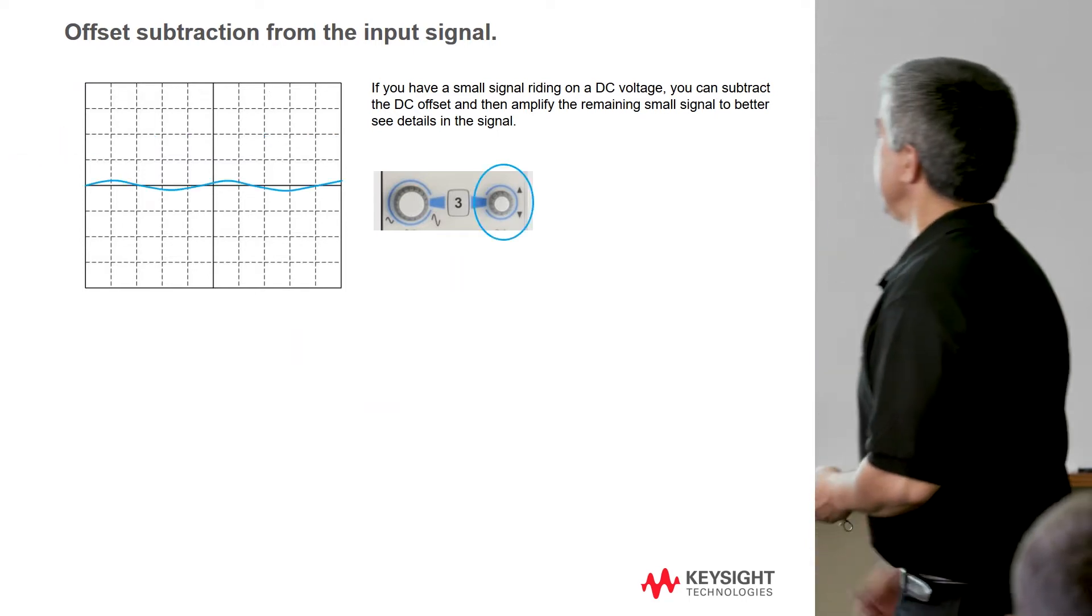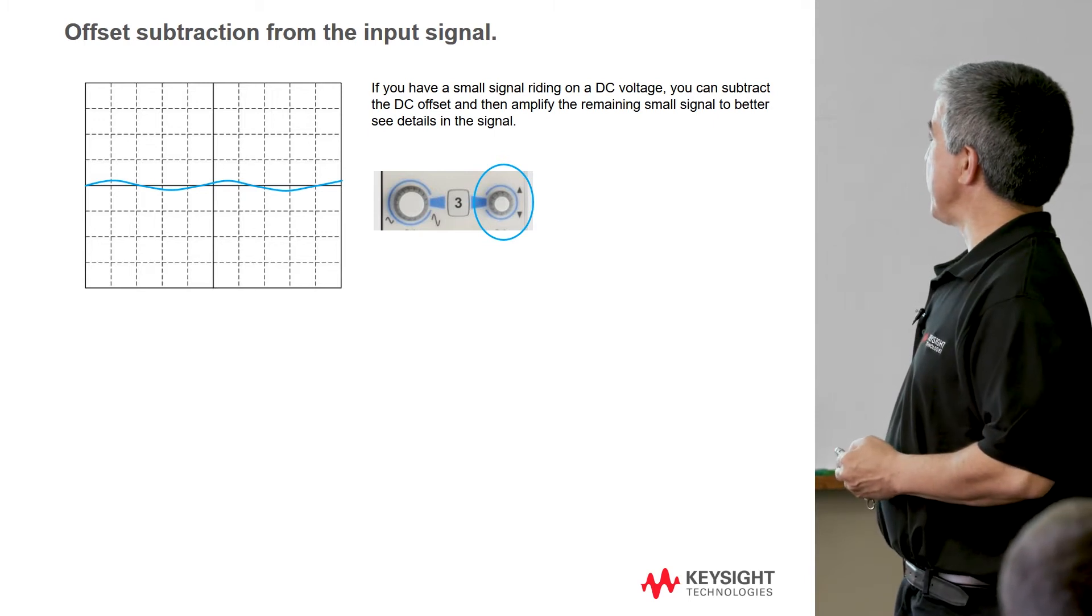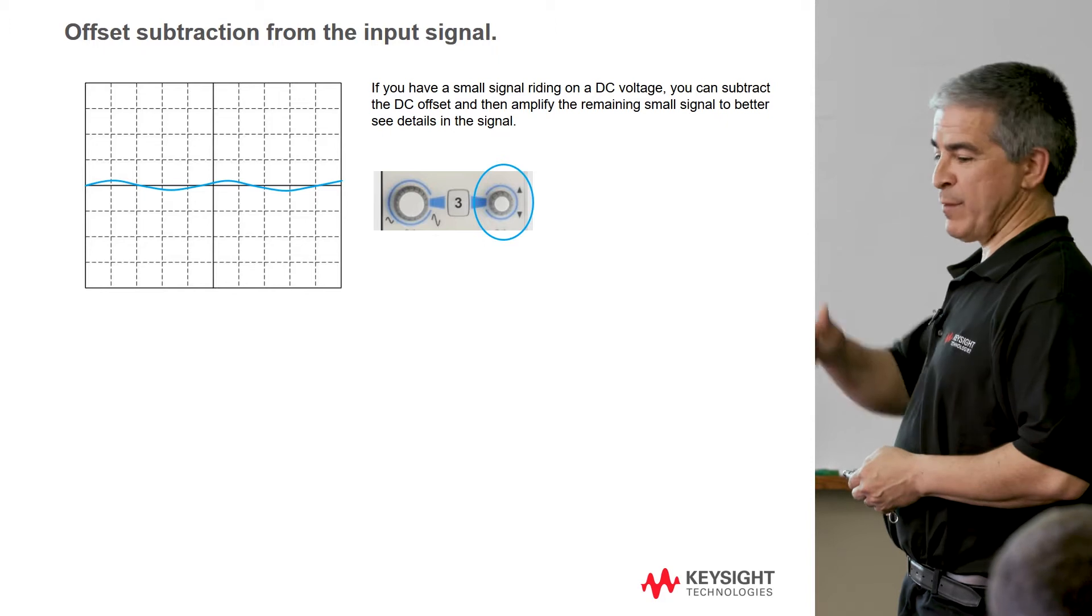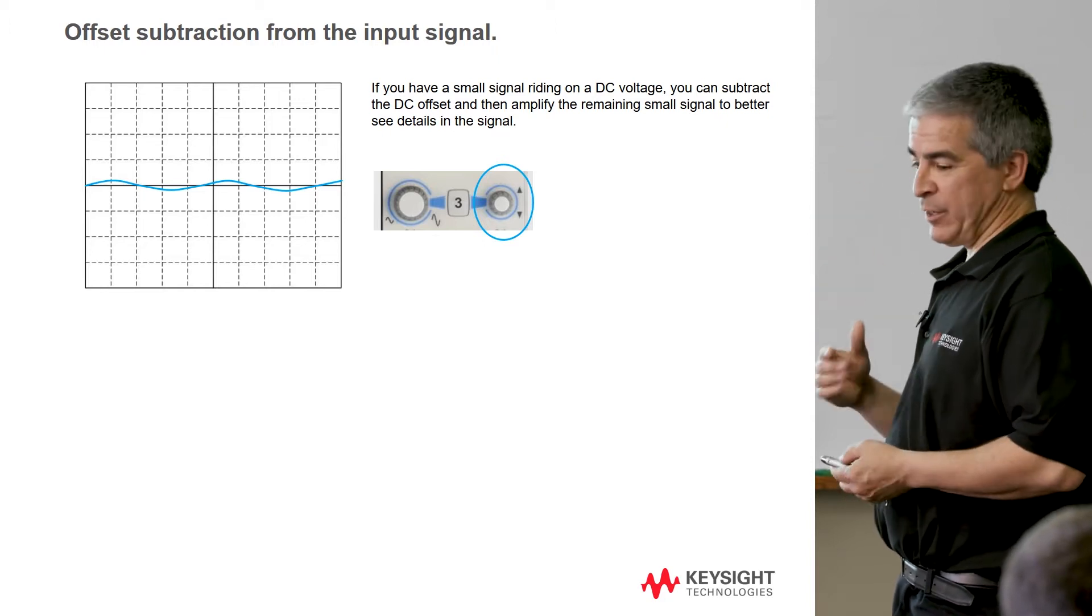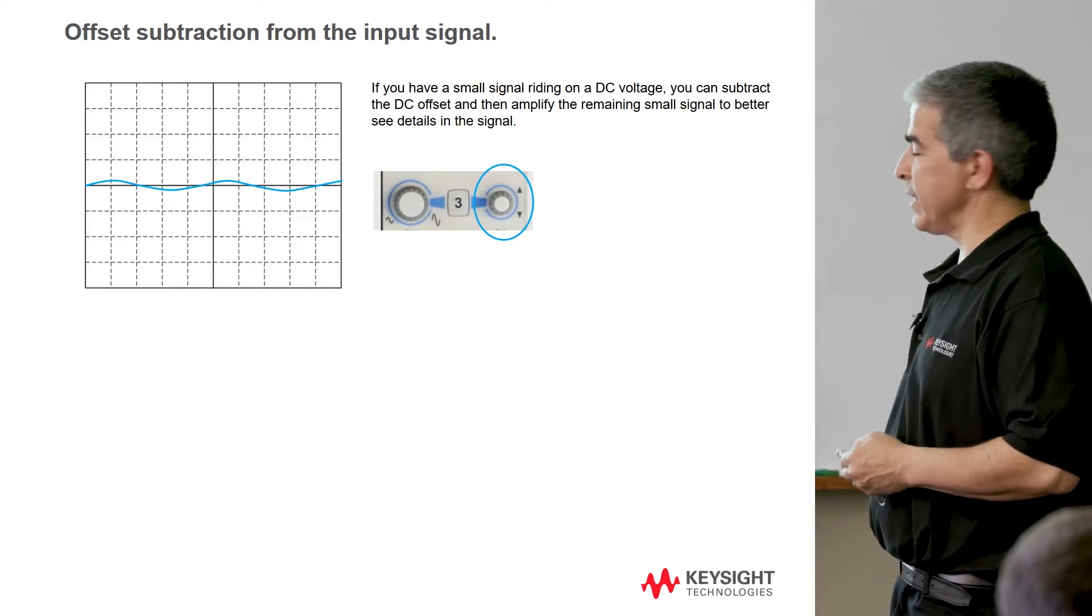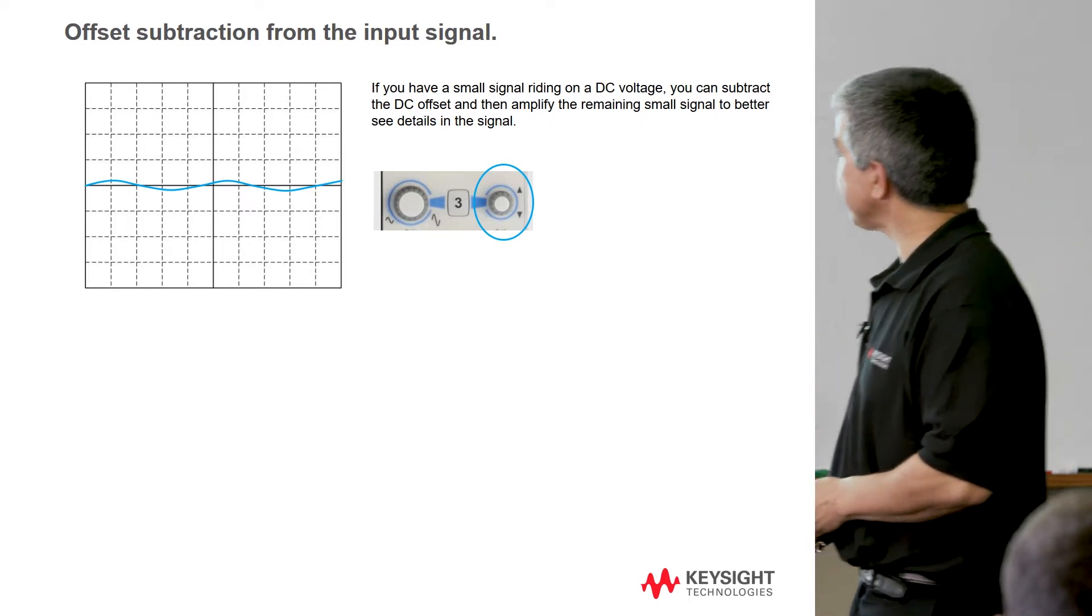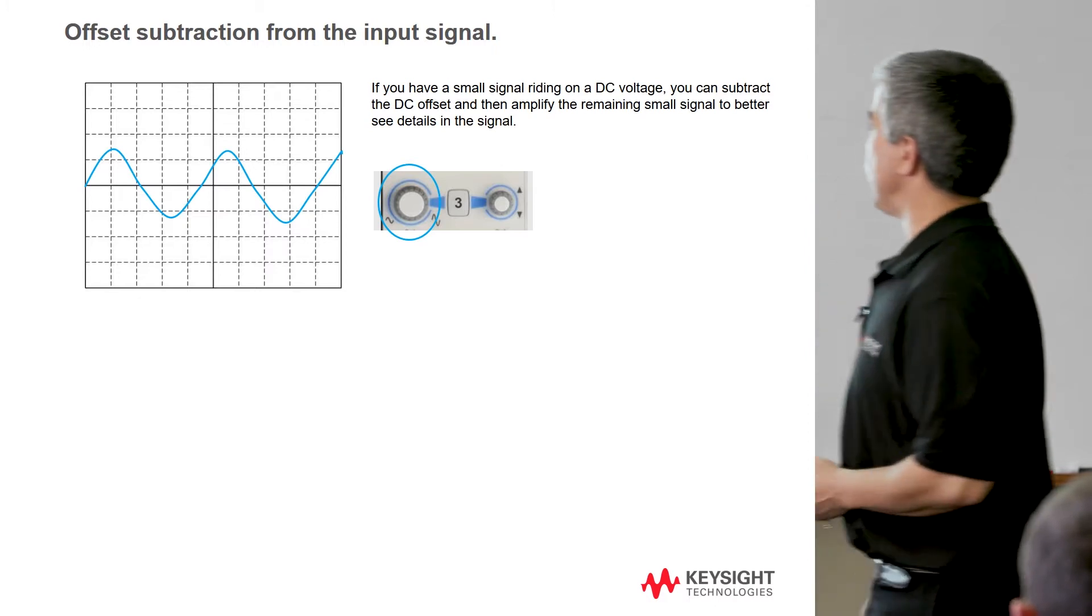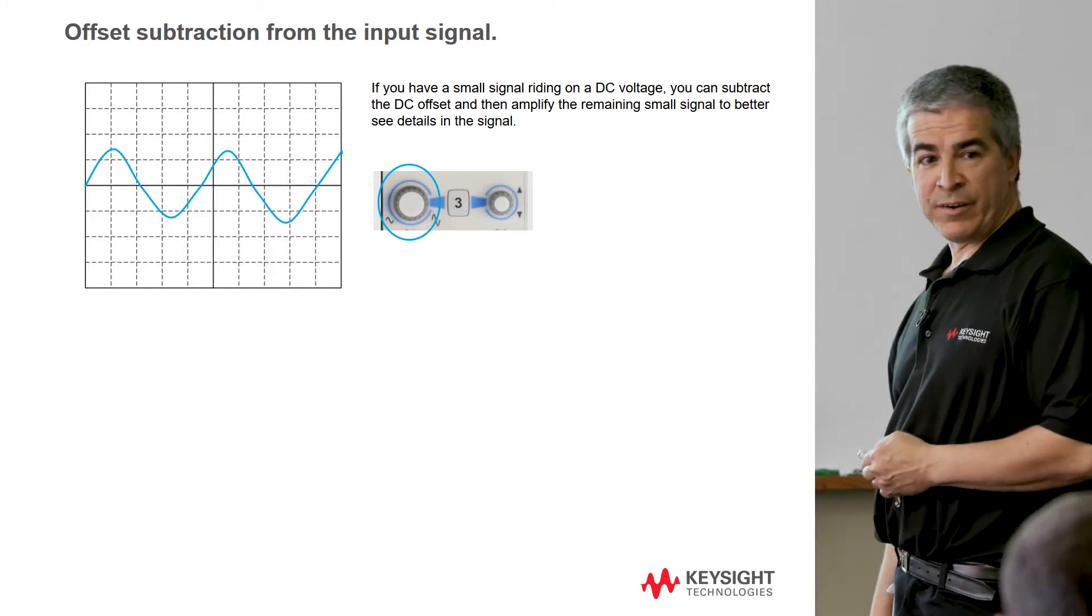So what you'd want to do is subtract that out. There's a little knob next to the volts per division knob that has this little up and down arrow. You turn that and you'll see the waveform go up and down. What that's actually doing is subtracting that DC voltage before it ever even gets to the preamp or the ADC. That allows you then to subtract the voltage out, then you can run up the volts per division and see this in greater detail.